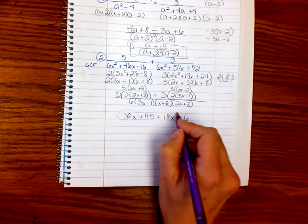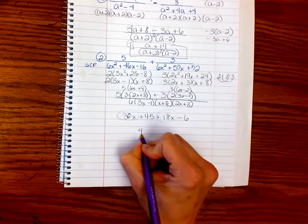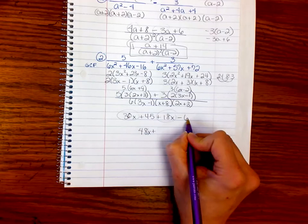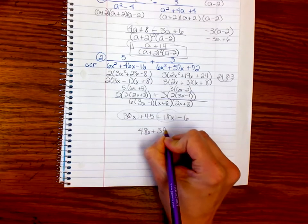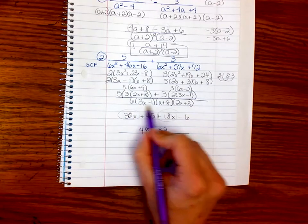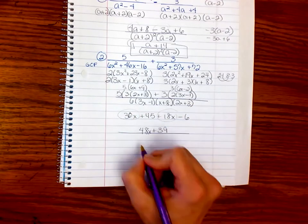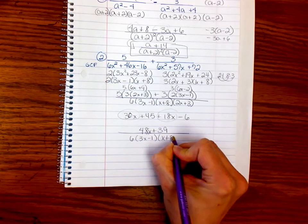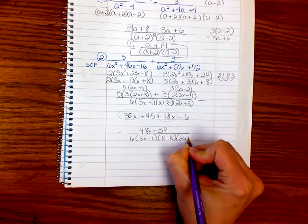These are the like terms. So, that gets us a 48x. 45 minus 6 is 39. Now, I just took care of the numerator. And then, because I don't want to write this every single time, it's a lot to write. So, then I'm going to write 6 times 3x minus 1 times x plus 8 times 2x plus 3.